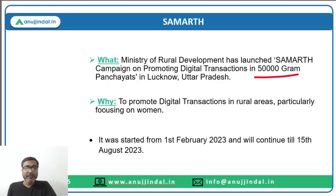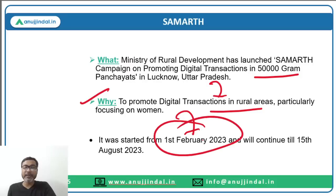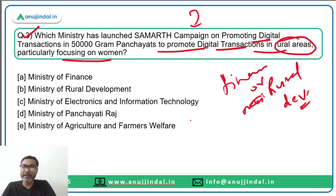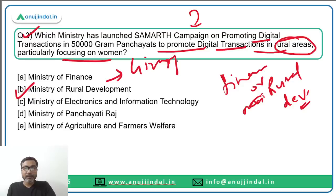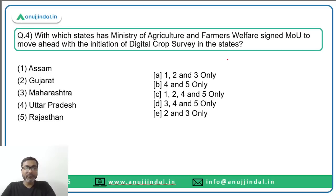The objective is to promote digital transactions in rural areas, particularly focusing on women. The campaign started from 1st February 2023 and will end on 15th August 2023, Independence Day. The correct answer is Ministry of Rural Development, headed by Giriraj Singh.